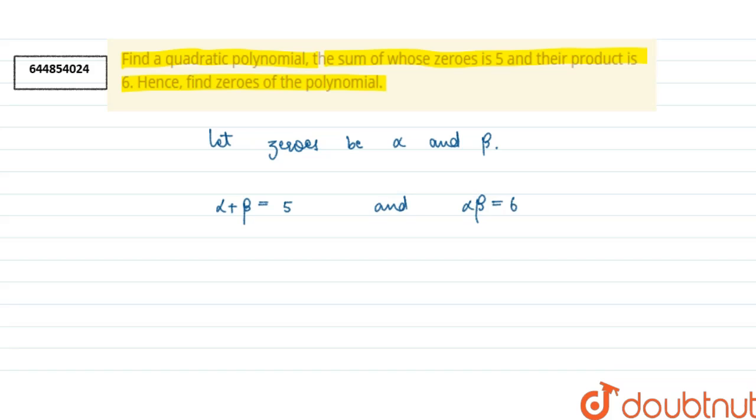So now we have to find the quadratic polynomial. Let's write the quadratic polynomial form. That is p(x) is equal to x square minus (alpha plus beta) into x plus alpha beta. So this is the form of quadratic polynomial.